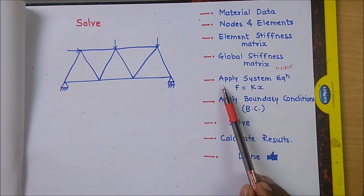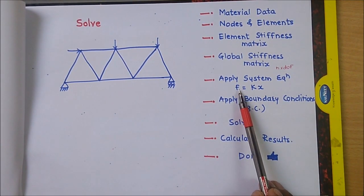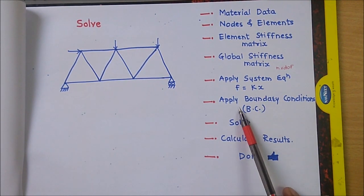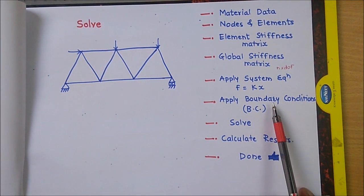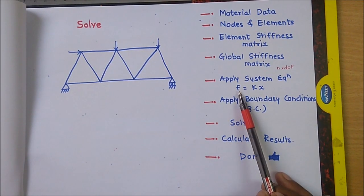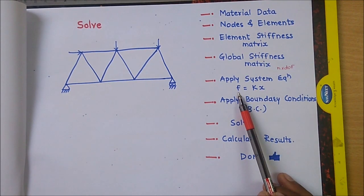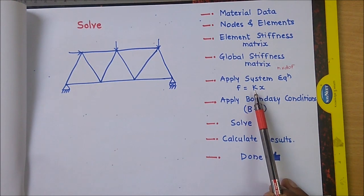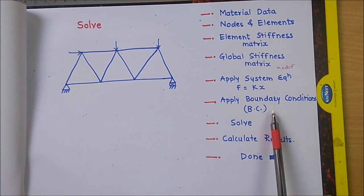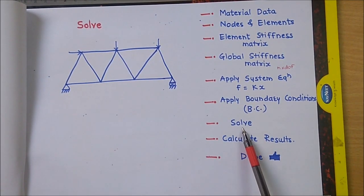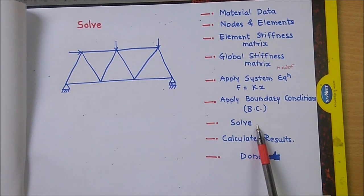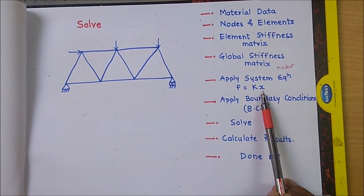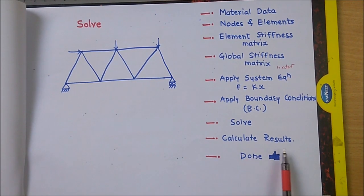After getting the global stiffness matrix, we have to prepare the system equation: F = Kx. Then apply the boundary conditions — fixed support, roller support — and get the reduced stiffness matrix equation, where F is the force applied on the nodes, x is the displacement, and K is the global stiffness matrix. After getting this reduced system equation, we use a proper method to solve it and calculate the results. After solving this stiffness equation we will get displacement, and from that we calculate stress, strain, and reactions.